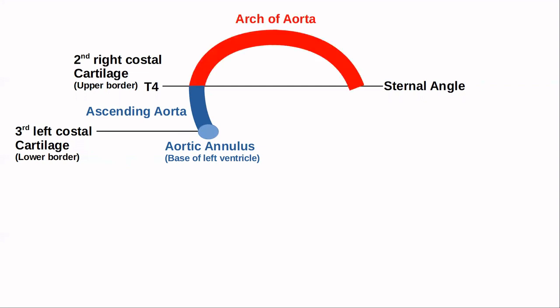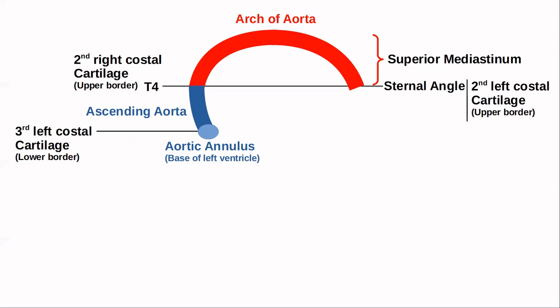This is the part where the arch of aorta begins. It goes posteriorly and to the left and ends again at the level of T4. The arch of aorta lies in the superior mediastinum and ends at T4, which is the upper border of the second left costal cartilage, because the arch travels from right to left and posterior.